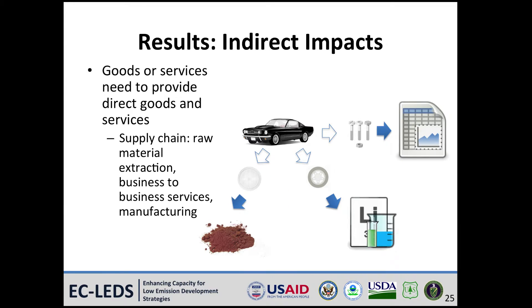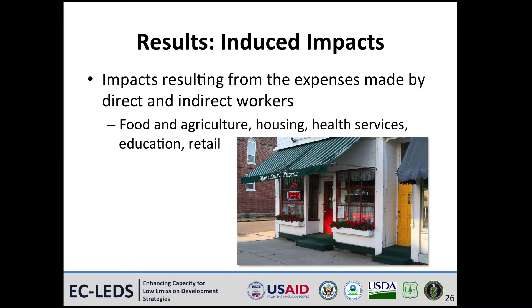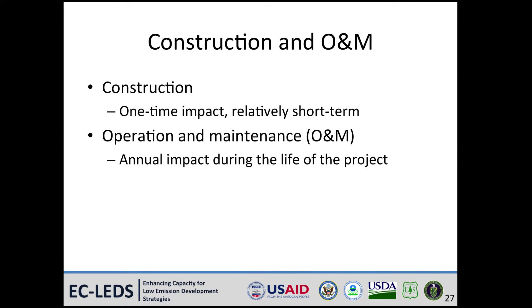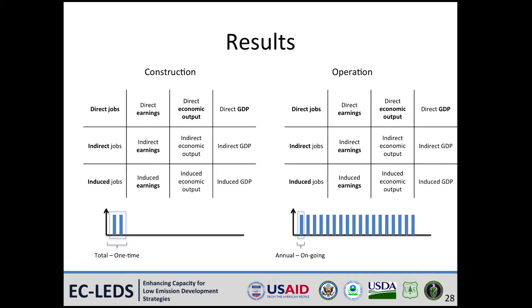Indirect impacts are money spent on all the goods or services needed to provide direct goods and services. In a car manufacturing plant, indirect impacts would include the money that the tire manufacturer spends on rubber, or money that the headlight manufacturer spends on raw materials. An induced impact results from expenses made by direct and indirect workers — for example, if an employee of the car manufacturer goes to lunch, the money she spends at the restaurant would be an induced impact. Total results from construction phase activities are one-time only; these jobs and their impacts end after construction. Operations phase jobs are continuous, so iJEDI reports two sets of results: one from the construction phase and one from the operations phase.